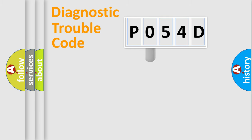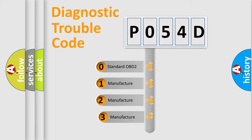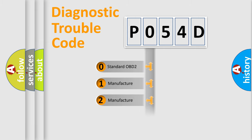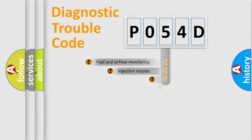This distribution is defined in the first character of the code. If the second character is expressed as zero, it is a standardized error. In the case of numbers 1, 2, or 3, it is a manufacturer-specific expression of a car-specific error.